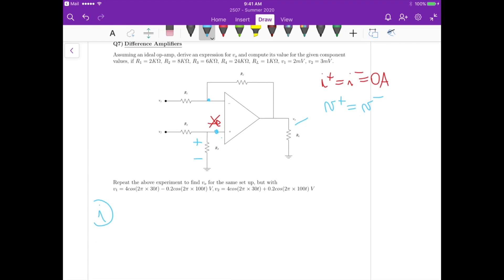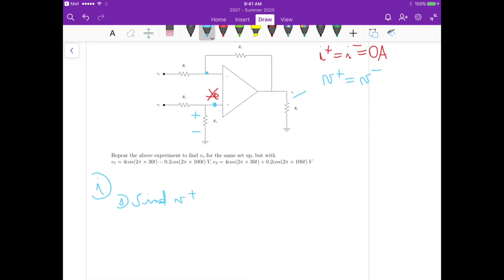So for the first step, find V plus. So in our case V plus is equals to V2 times R4 divided by R3 plus R4. That's the first equation, right, now that we know V plus, we can apply KCL here.